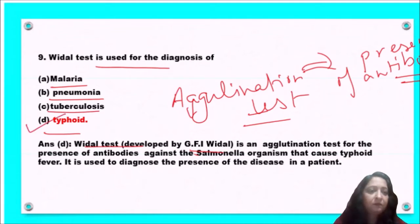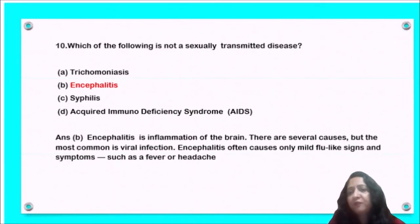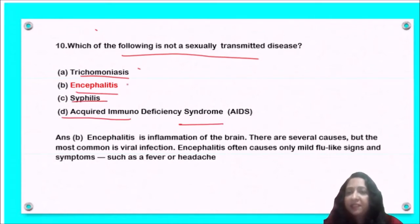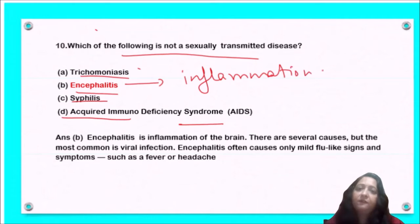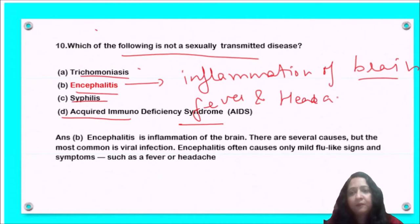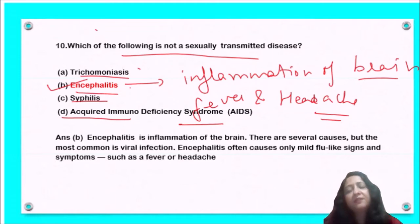Next question: which of the following is NOT a sexually transmitted disease — trichomonasis, elephantiasis, gonorrhea, or acquired immunodeficiency syndrome? Elephantiasis is inflammation caused by filarial parasites, and its signs and symptoms include fever and headache — it is not sexually transmitted. So option B, elephantiasis, is the correct answer.